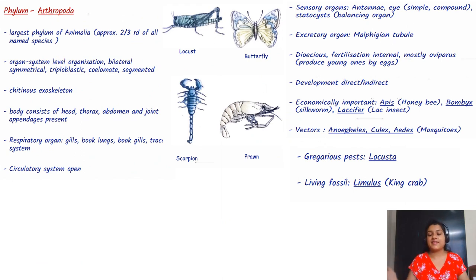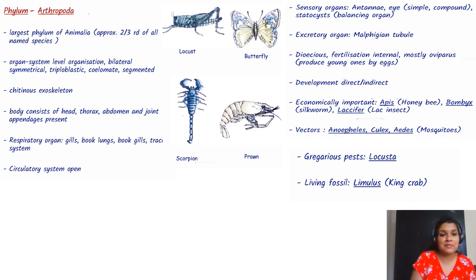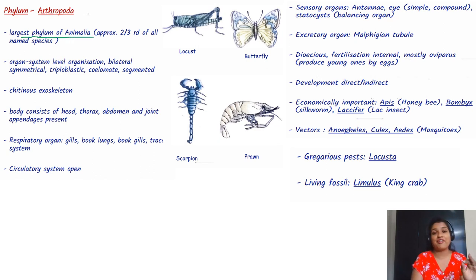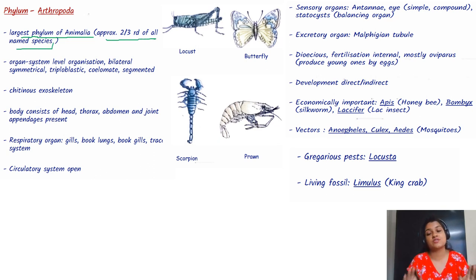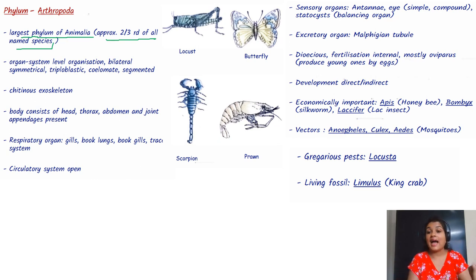Now let us come to Arthropoda, the phylum of insects. Remember, this is the largest phylum of Animalia, with approximately two-thirds of all named animal species.